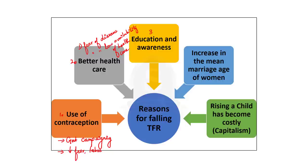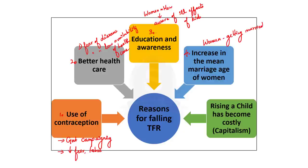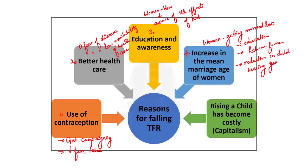The third reason is education — both women and men are more educated now and increasingly aware of the ill effects of having more children. The fourth reason is an increase in the mean marriage age of women. Women are getting educated and increasingly participating in the labor force, so they are getting married later. This late marriage reduces childbearing years, thereby reducing TFR.